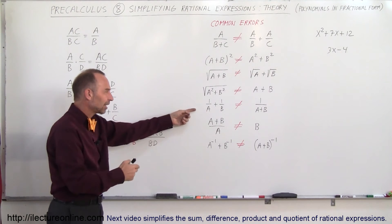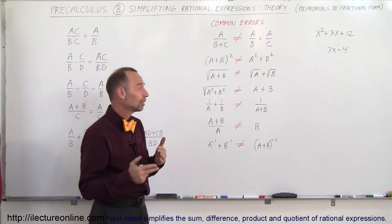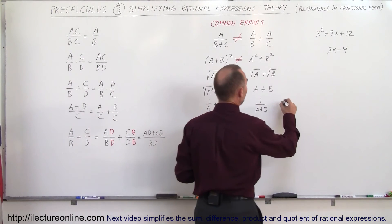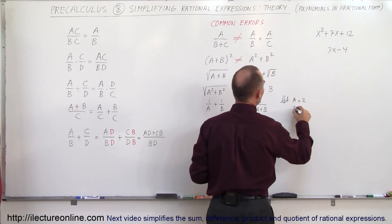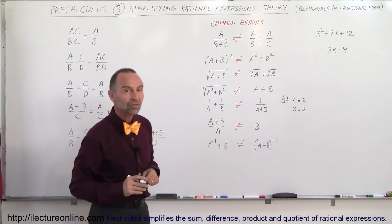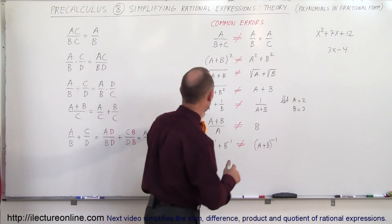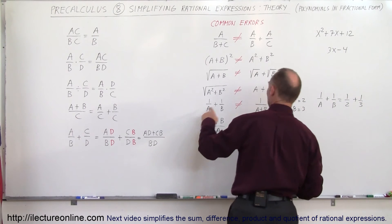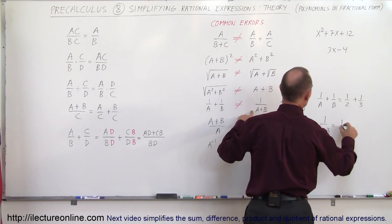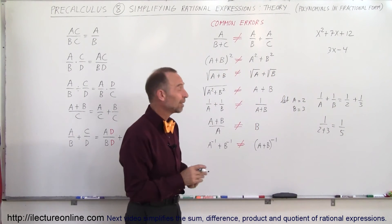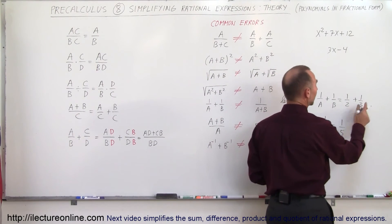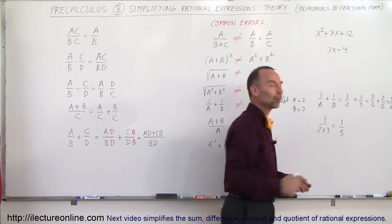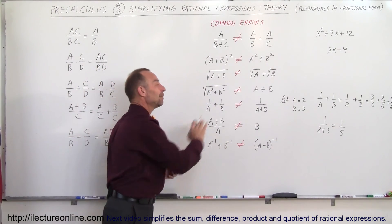If you are taking a test and you wonder whether a step is valid, it is easy to check by plugging in numbers. For example, let a equal 2 and b equal 3, and see if both sides give the same result. For 1/a plus 1/b versus 1/(a plus b): 1/2 plus 1/3 equals 3/6 plus 2/6, which is 5/6. But 1/(2 plus 3) is 1/5. Since 5/6 is not equal to 1/5, you know you cannot do that.